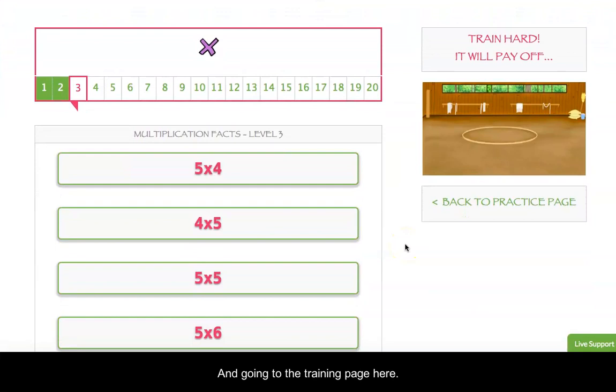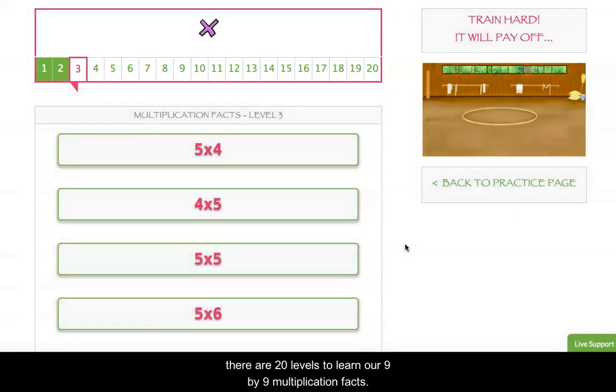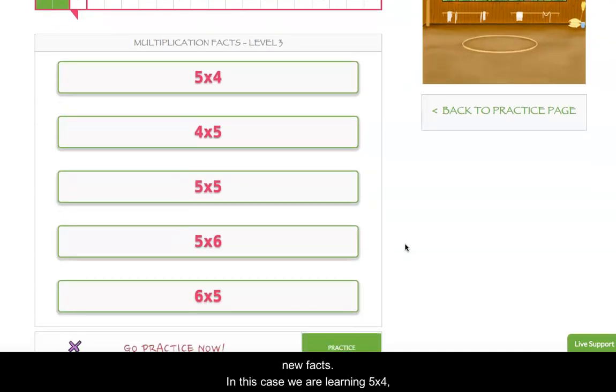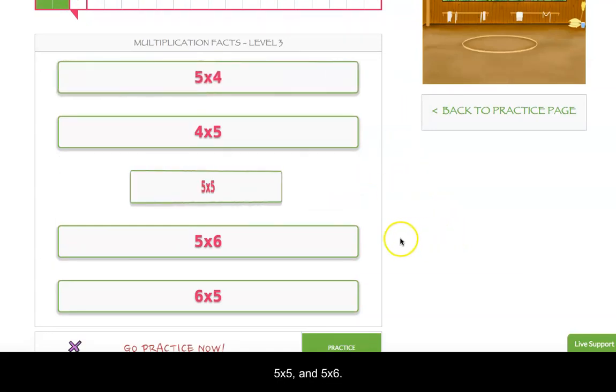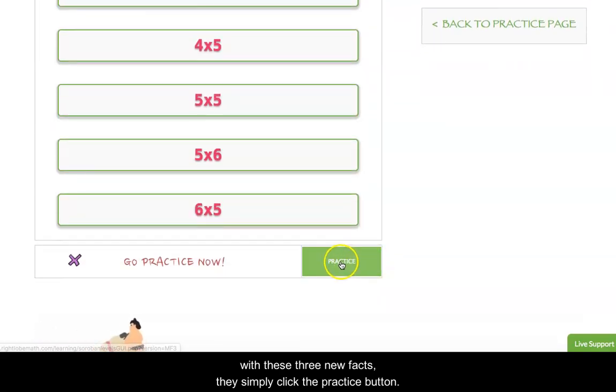Going to the training page here, we can see we have a roadmap at the top where there are 20 levels to learn our 9x9 multiplication facts. And typically we have students at each level learn 2 to 3 new facts. So in this case, we are learning 5x4, 5x5, and 5x6. And so once a student is comfortable with these 3 new facts, then they simply come and click the practice button.